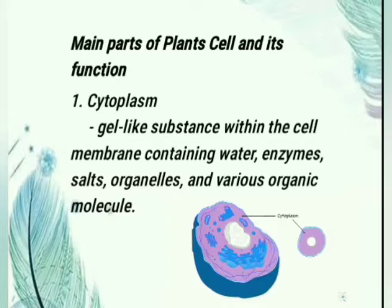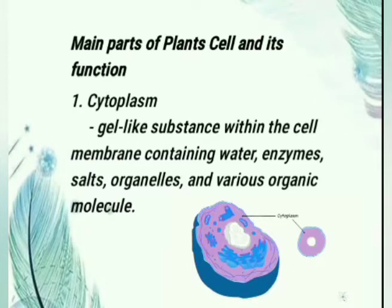First is the cytoplasm — a gel-like substance within the cell membrane containing water, enzymes, salts, organelles, and various organic molecules. Cytoplasm in the plant cell aids with the suspension of organelles, support of the cell's internal structure, and helps the plant cell maintain its shape.